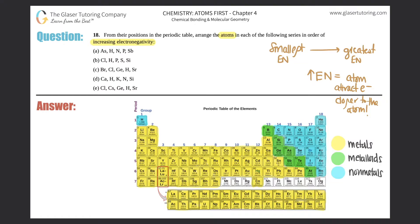There are many other questions before this that I did that talk more in depth about electronegativity, so if you want more information, go back to those. But for right now, let's just do the trend. On the periodic table, electronegativity follows the same trend as ionization energy, which we learned in the last chapter.